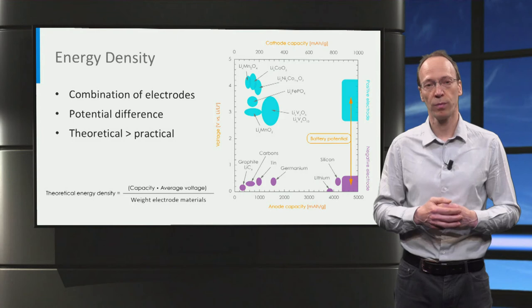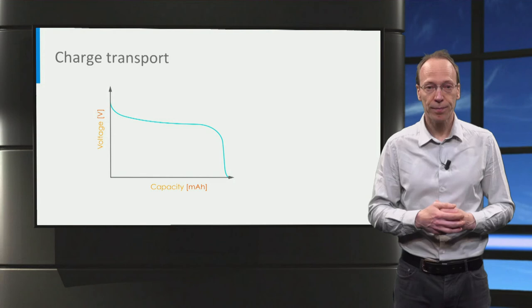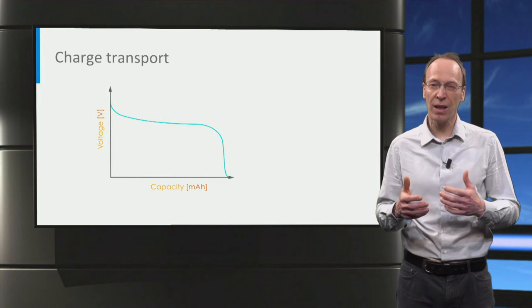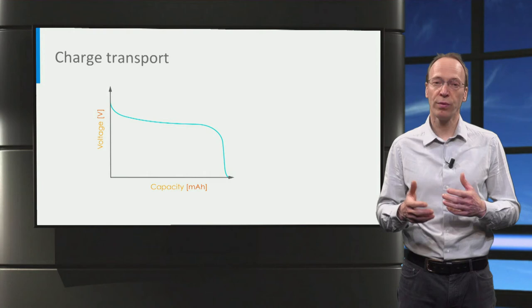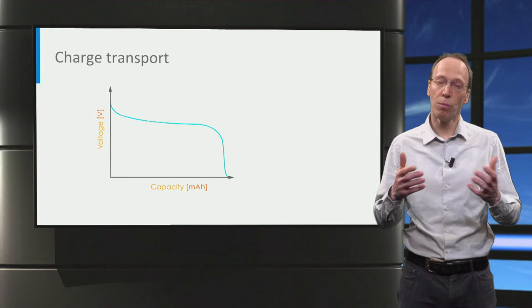Next, let's have a look at what determines the internal resistance and power density of batteries, which determines for instance the charging time. As a result of the battery internal resistance, the battery voltage increases with charge current and decreases with discharge current, as we have seen in the previous lecture. As a consequence, the energy efficiency reduces with increasing current, and more heat is produced in the battery.